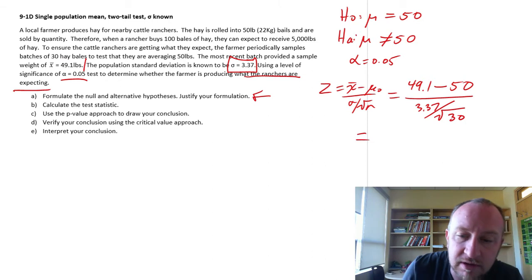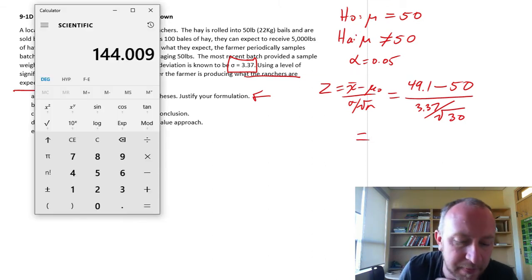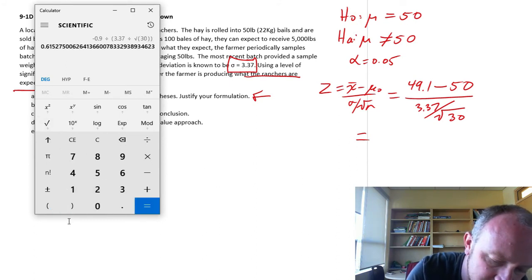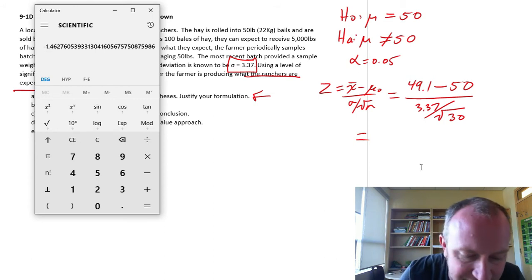And now I'll just pull up my calculator. And 49.1 minus 50 divided by 3.37 over root of 30. Negative 1.46.